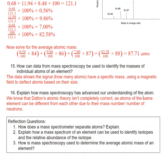So how can data from mass spec be used to identify the masses of individual atoms of an element? So that data is just showing us how many atoms have a specific mass using a magnetic field to deflect the atoms based on their size. So how has mass spec advanced our understanding of the atom? Well, we know that we have isotopes, and we know that each atom of an element is not identical, but they can be slightly different due to things like the number of neutrons.